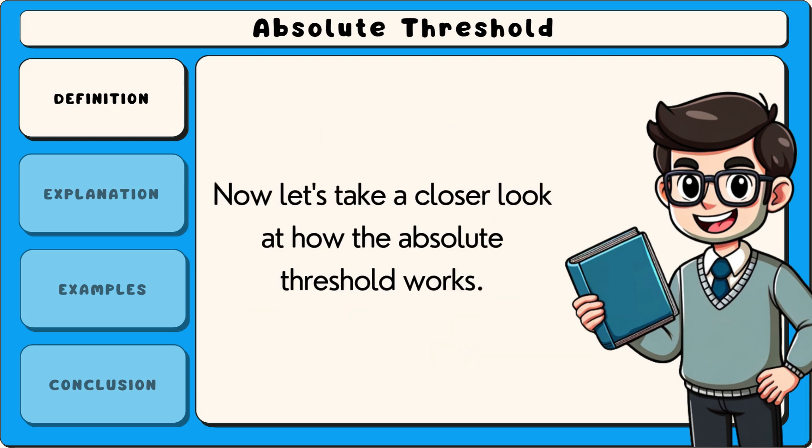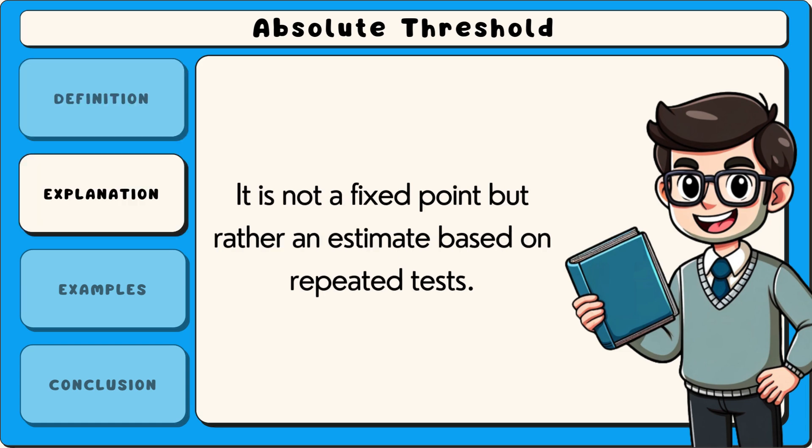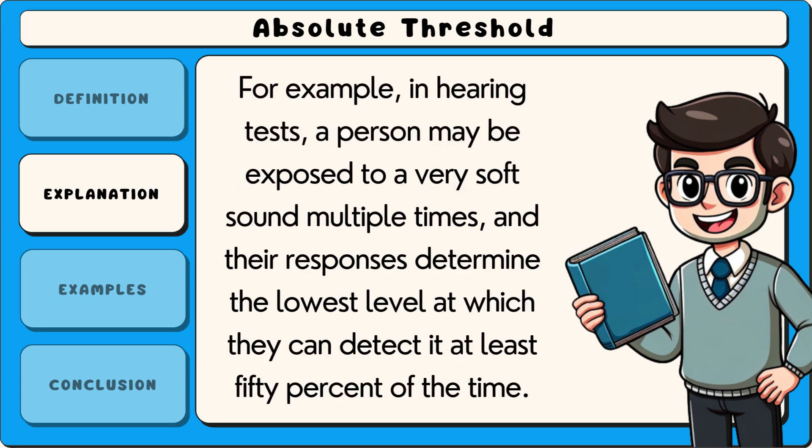Now let's take a closer look at how the absolute threshold works. It is not a fixed point but rather an estimate based on repeated tests. For example, in hearing tests a person may be exposed to a very soft sound multiple times, and their responses determine the lowest level at which they can detect it at least 50% of the time.